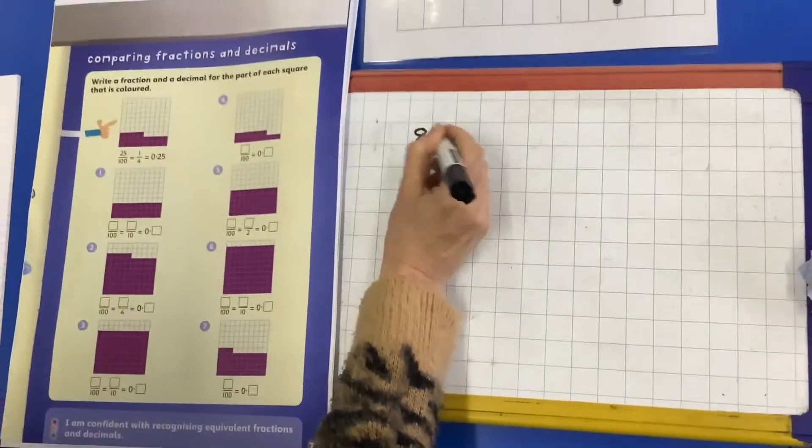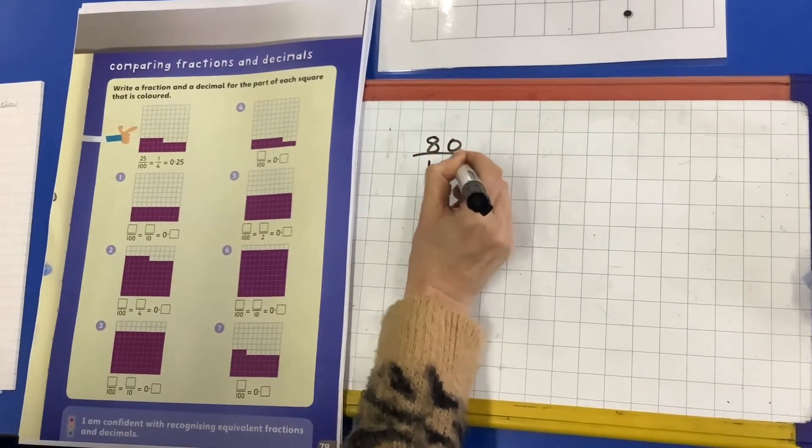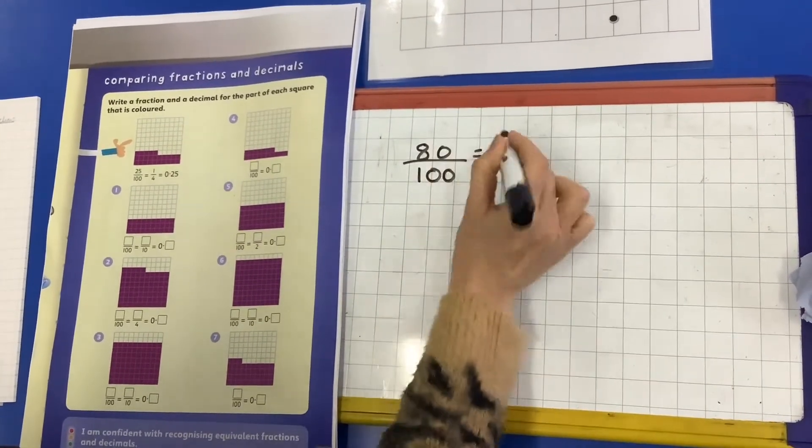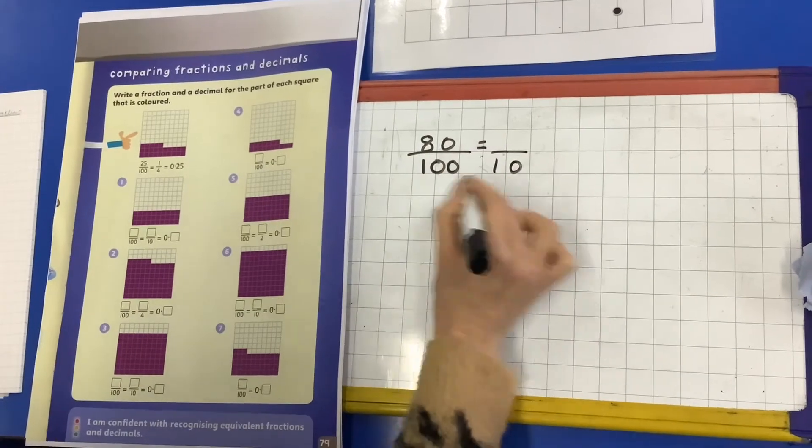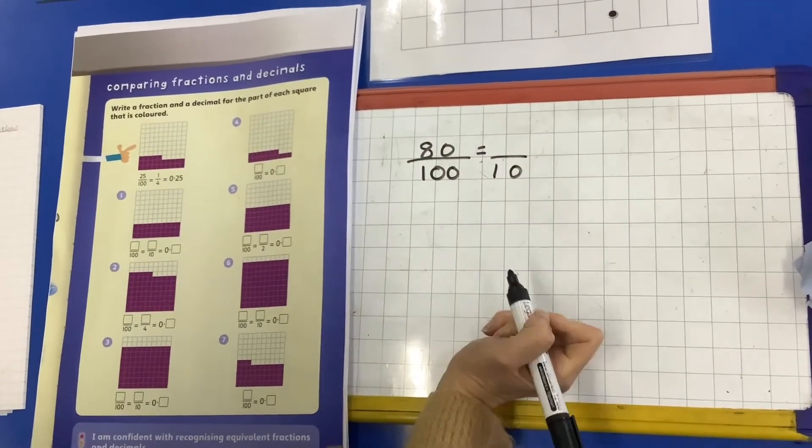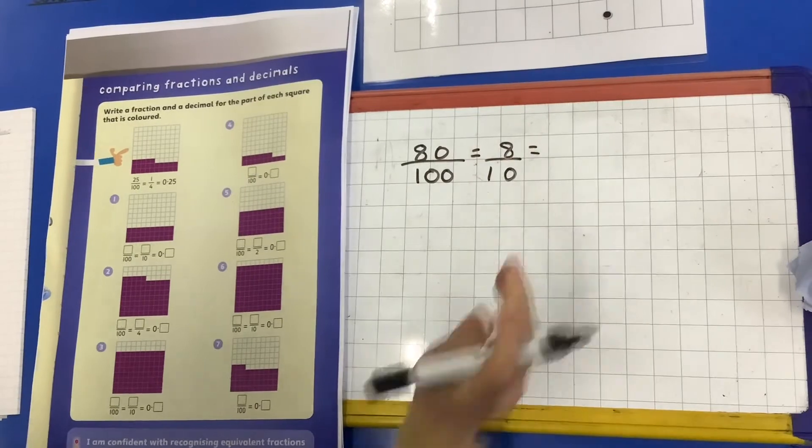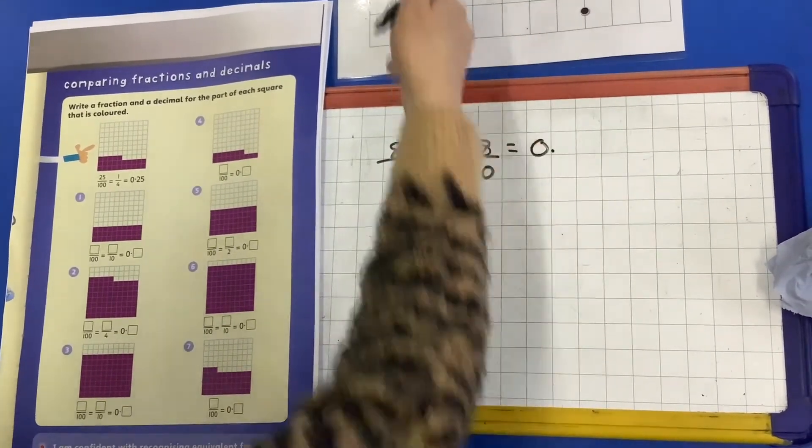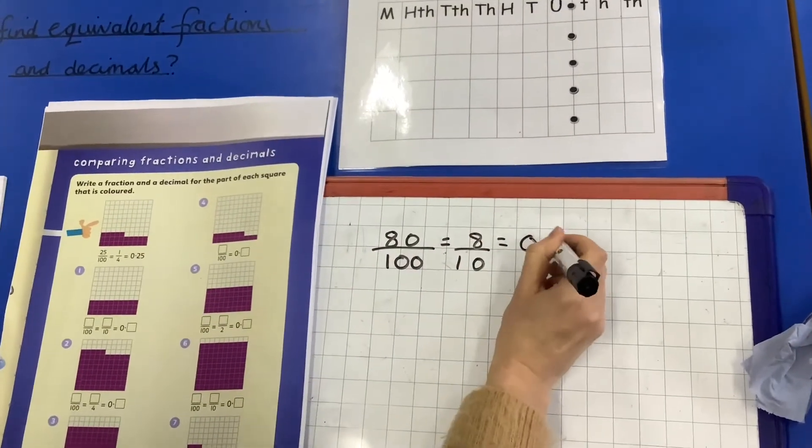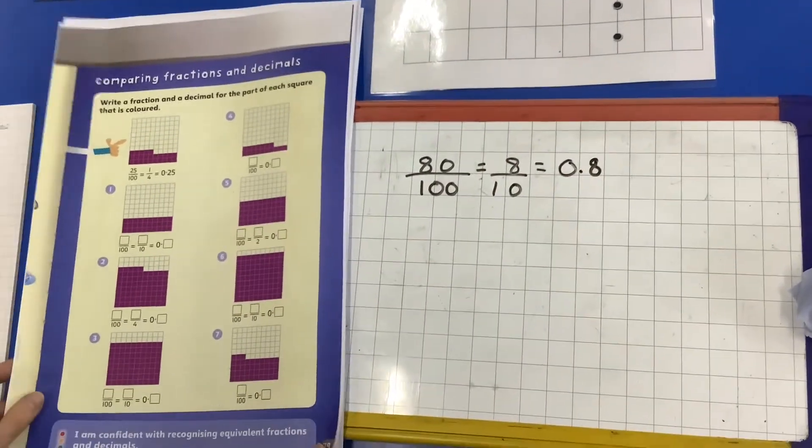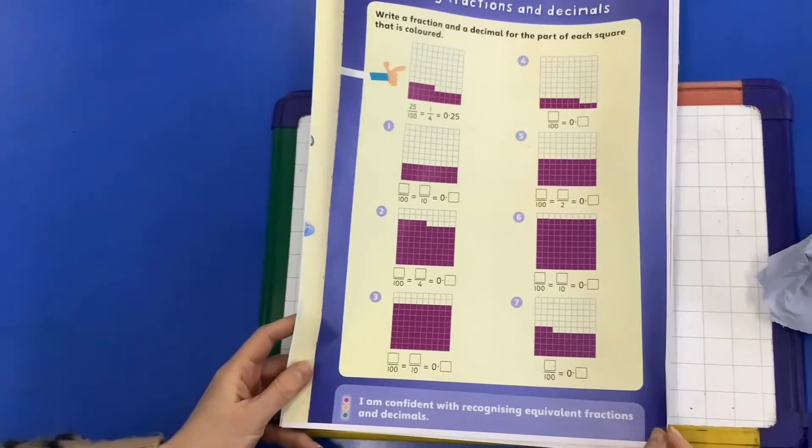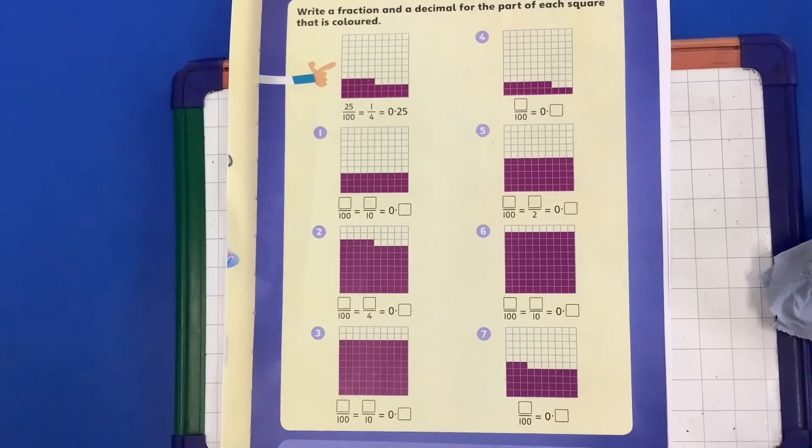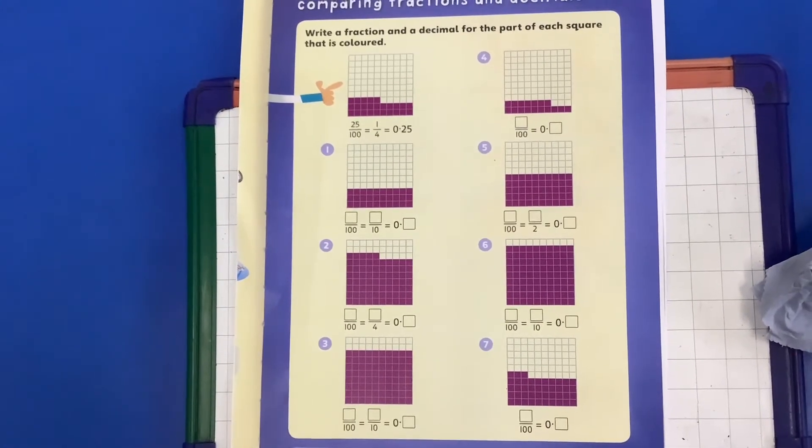So what am I going to do with this? 80 out of 100, I can put this into tenths quite easily by dividing the numerator and the denominator by the same number. The denominator has been divided by 10, so the numerator must be divided by 10. Hopefully you can see that as a decimal, once I've got 8 tenths, that will be 0.8, the answer to number 3. So if you can freeze the screen, this is your activity for today if you are not feeling very confident, if you feel like you need a little bit more practice.